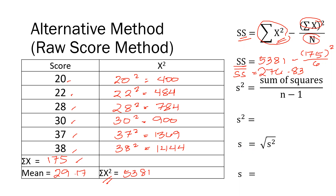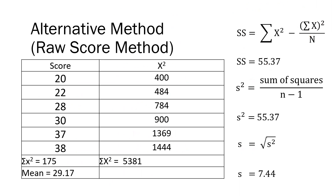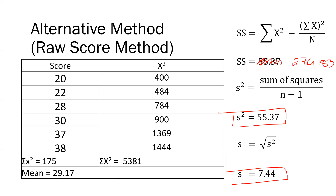As you can see, the variance and standard deviation we obtained are just the same using both methods. That is it, everyone. Thank you very much for this demonstration on how to compute for the variance and standard deviation using the deviation method and the raw score method. I hope this video is very helpful. Thank you very much for listening, and see you next time. Bye, everyone.